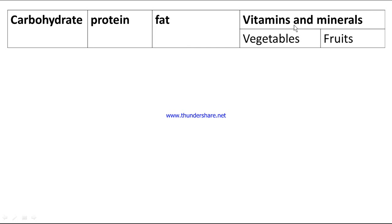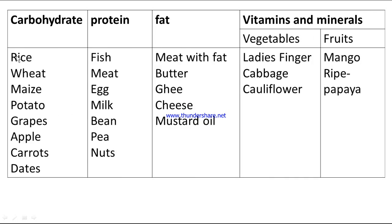Carbohydrates: rice, wheat, maize, potatoes, grapes, apple, carrot, dates. Proteins: fish, meat, egg, milk, bean, pea, nuts. Fat: meat with fat, butter, ghee, cheese, mustard oil. Vegetables: lady's finger, cabbage, cauliflower. Fruits: mango, ripe papaya.